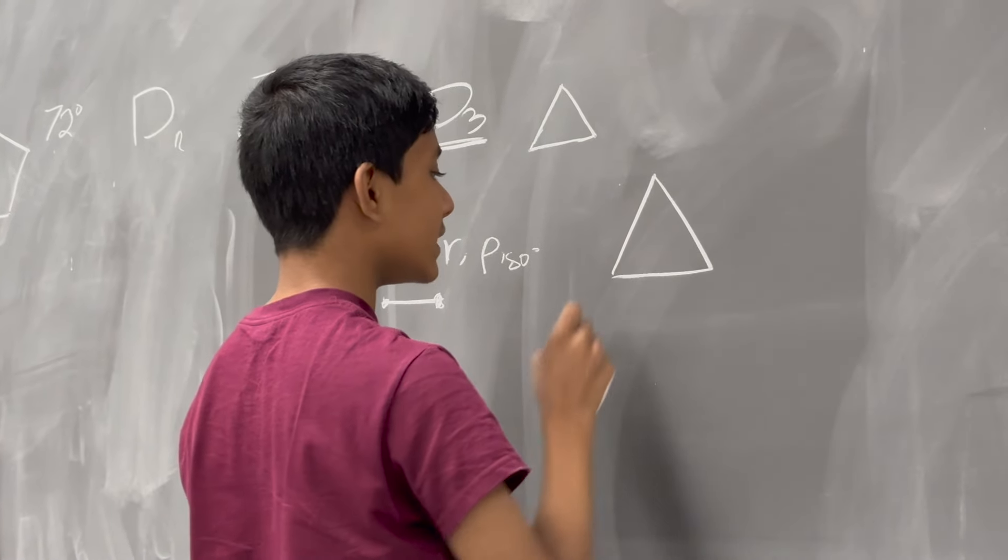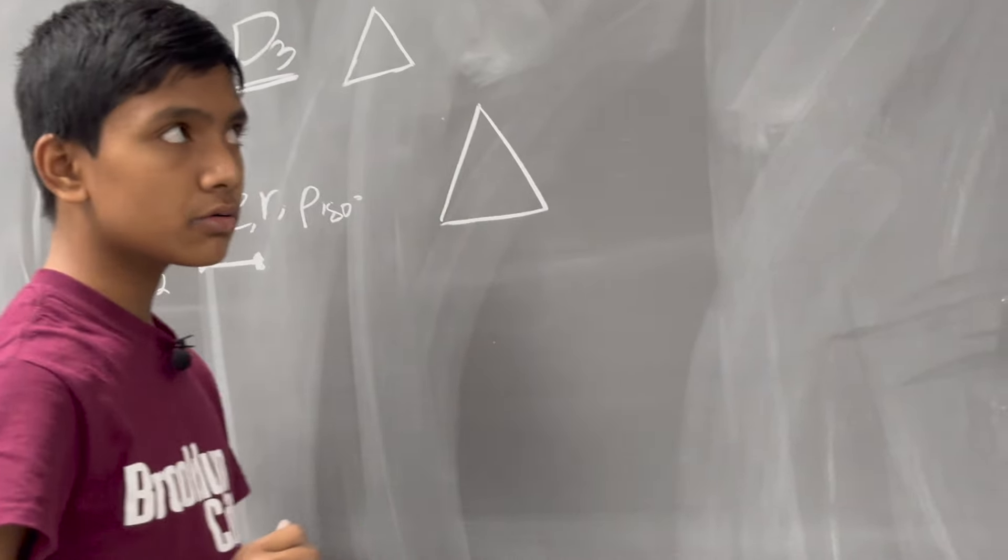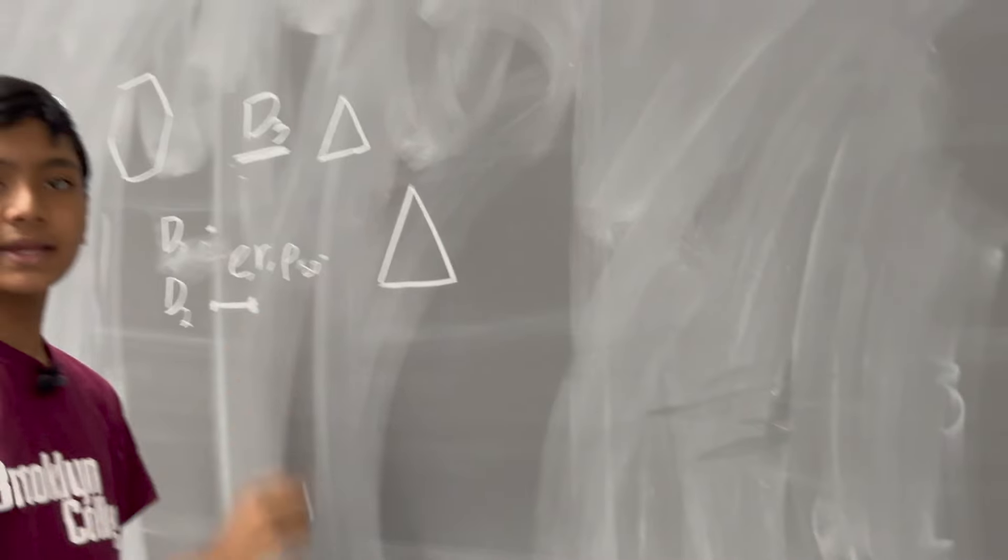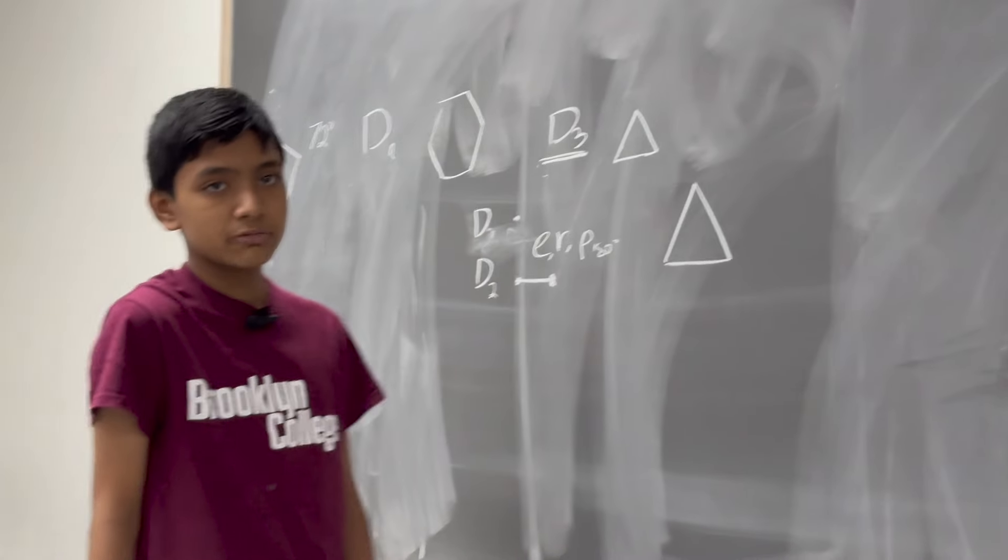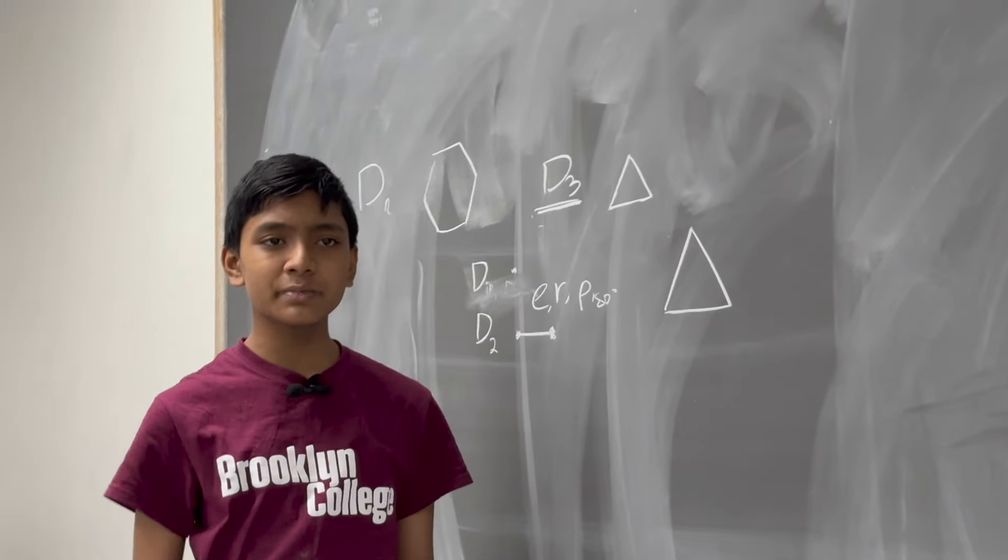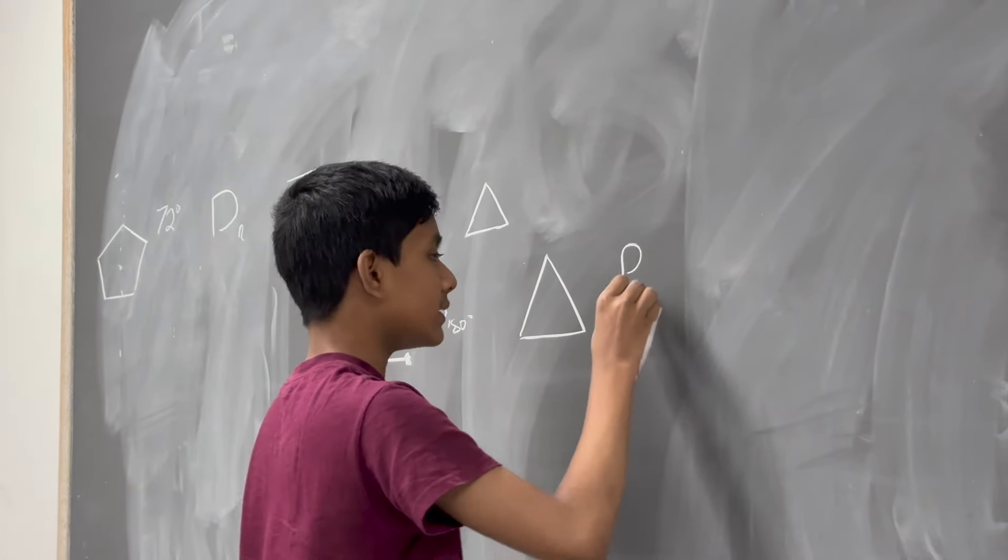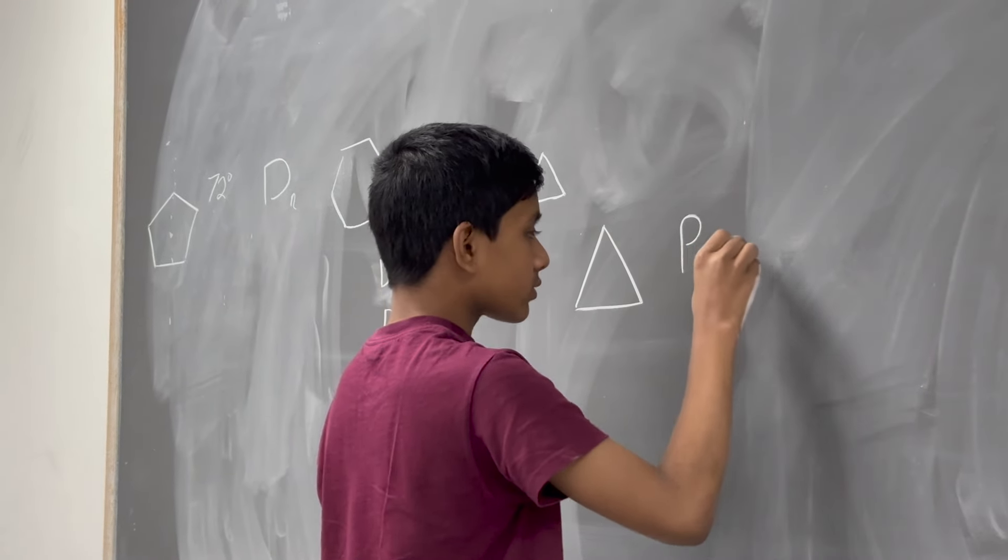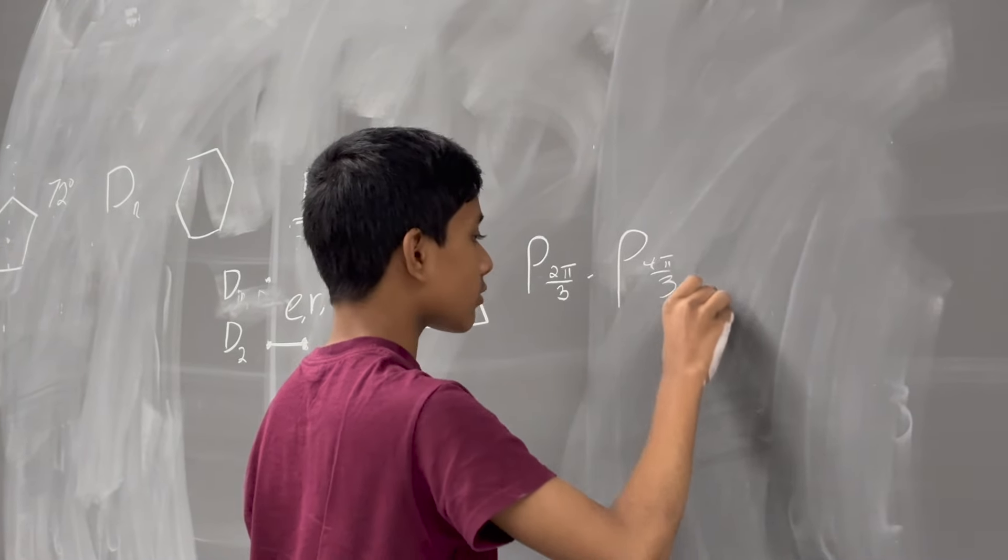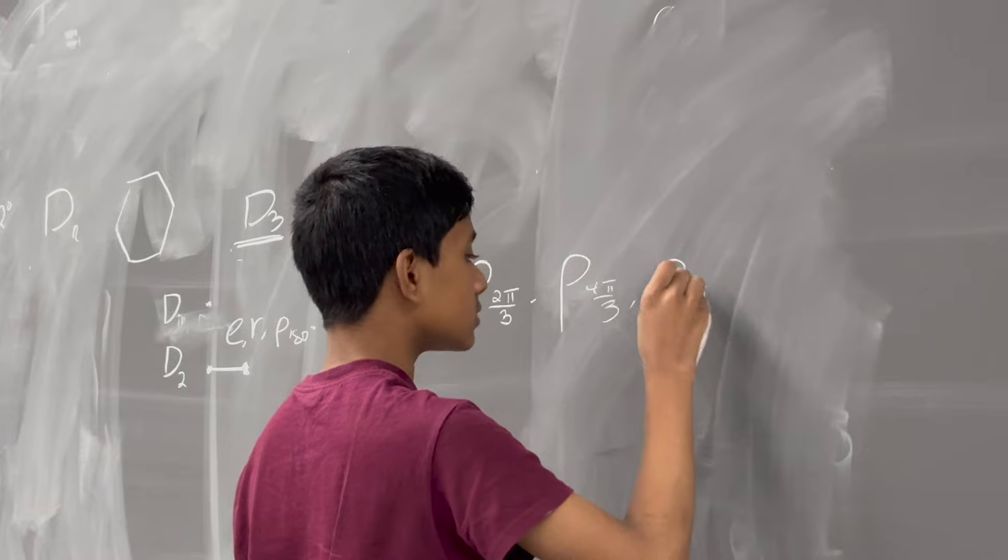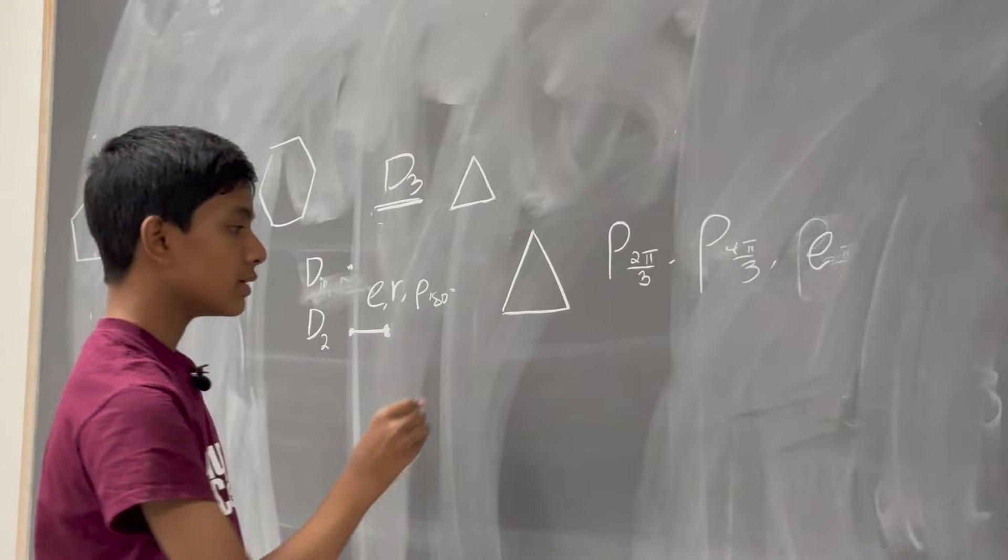So, how many ways can you rotate this thing? Well, you can rotate it by 2 pi over 3, and it'll come back to itself. Well, you can rotate it by 4 pi over 3, and it'll come back to itself. And, of course, you can always rotate it by 6 pi over 3, but that's just the identity. So, you have a rotation of 2 pi over 3, a rotation of 4 pi over 3, and a rotation of 6 pi over 3, which is just the identity.